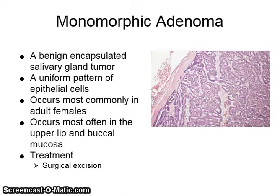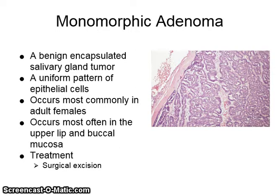A monomorphic adenoma is a benign encapsulated salivary gland tumor. It shows a uniform pattern of epithelial cells microscopically. It occurs most commonly in adult females and most often in the upper lip and buccal mucosa. It is treated by surgical excision.